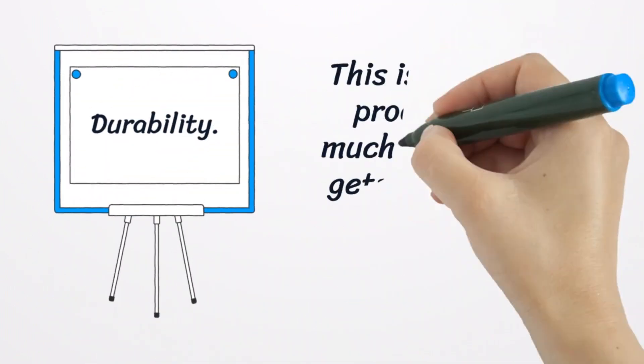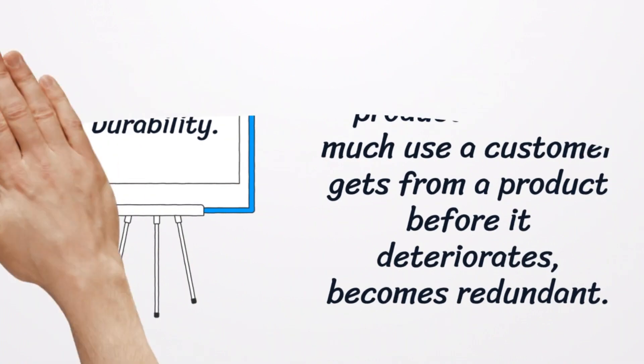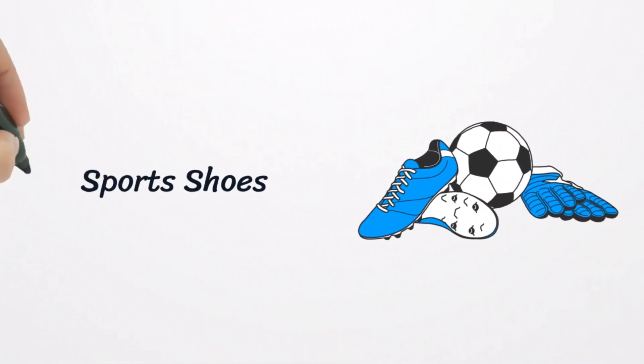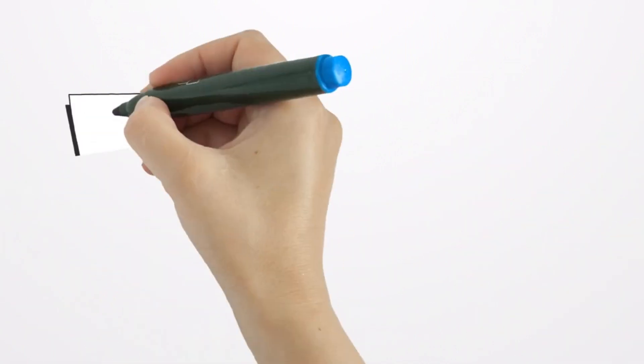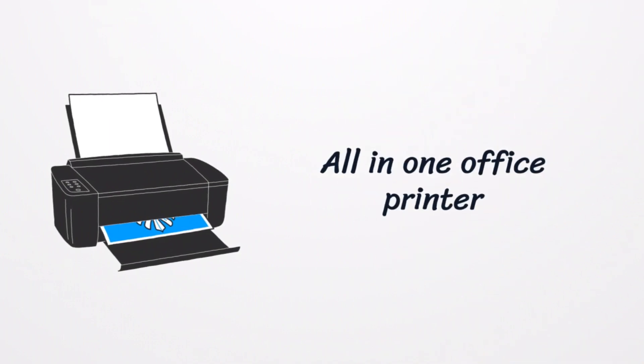Durability is the fifth dimension. This is a measure of product life. How much use a customer gets from a product before it deteriorates, becomes redundant, or is no longer worth the cost of repair. For example, a pair of sports shoes only needs to last a season, but an all-in-one office printer should work at least for five years.